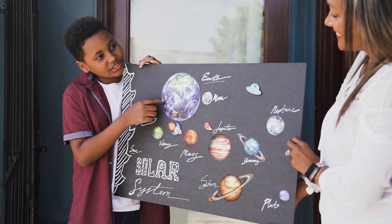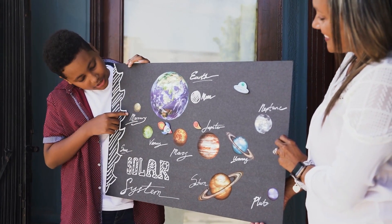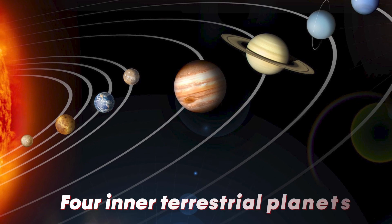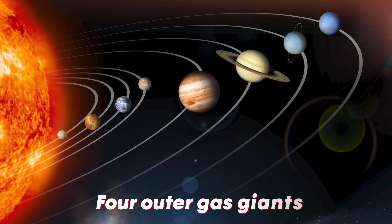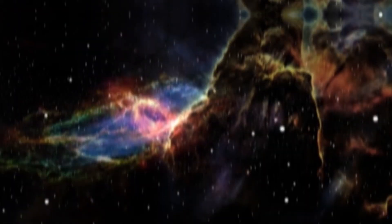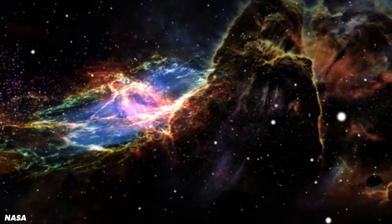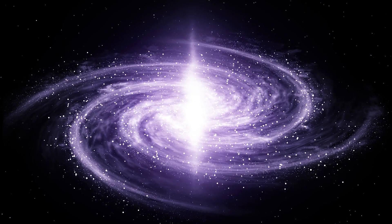Expanding our view to the wider solar system, we find another unique feature: the arrangement of planets. Our solar system comprises four inner terrestrial planets, followed by four outer gas giants. This setup is quite different from many other star systems, where gas giants are found closer to their stars.